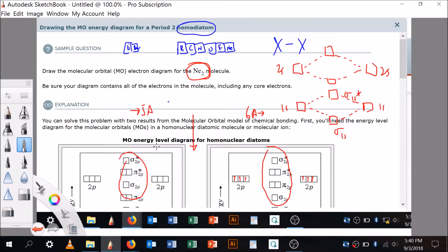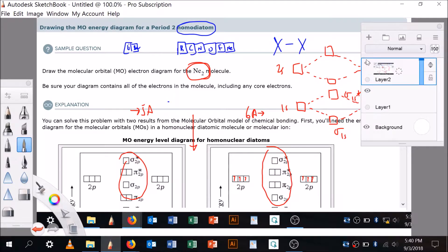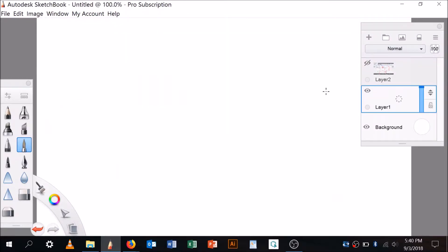Let's go back to the sketch pad and start from the ground up. We're dealing with neon bonding with neon. I'm going to make my 1s, 2s, and 2p orbitals.